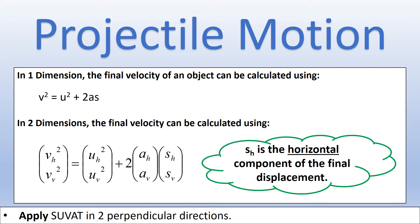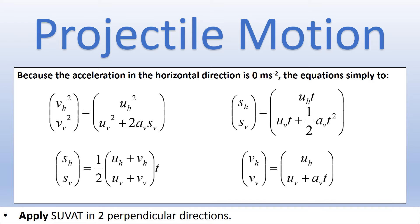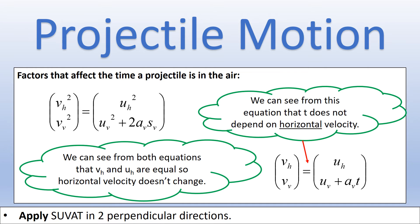For projectile motion specifically, the object only accelerates in the vertical direction due to gravity. We can simplify the equations by setting horizontal acceleration to zero. Any term containing horizontal acceleration disappears: 2as becomes zero, the half at² term and the at term both vanish. These simplified vector equations are what we use to solve projectile motion problems.